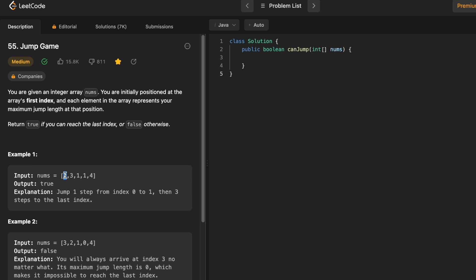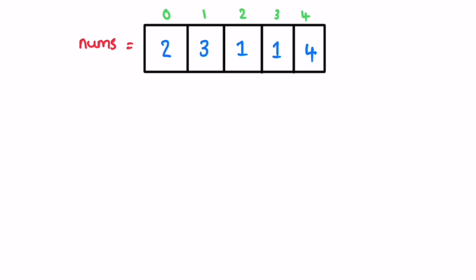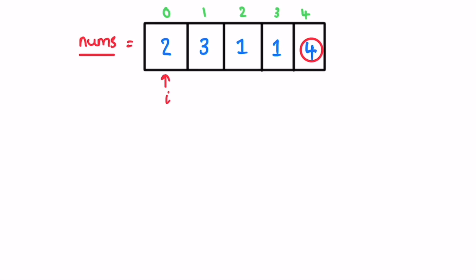So if you are pointing at 2, it can jump two positions to its right and will reach maximum there. Now let's take a look at this example and see how this question can be solved. I have taken the same example given to us — this is the nums array. We start our jump from the first element at the zeroth index. Our task is to at least reach the last index or we can also cross the last index.